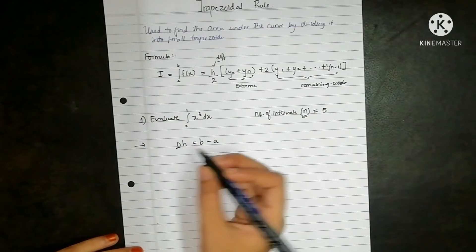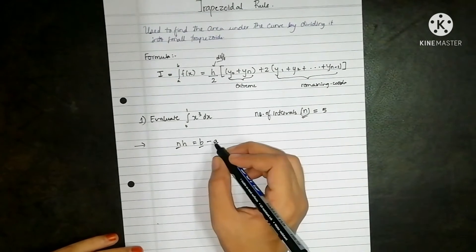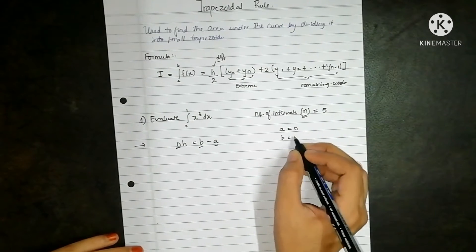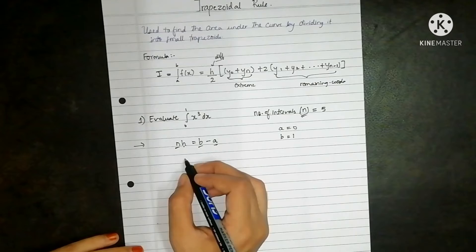We have the value of n. b is the upper limit, a is the lower limit. So we have a is equal to 0, b is equal to 1, and we need to find h.